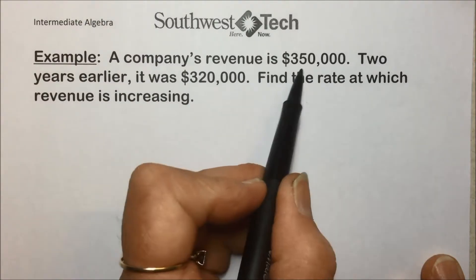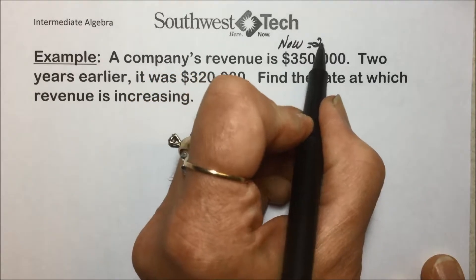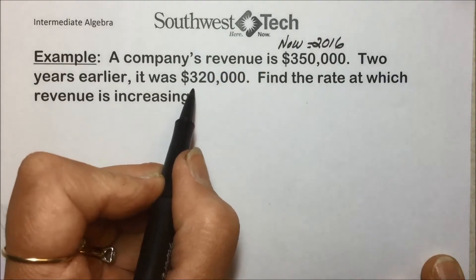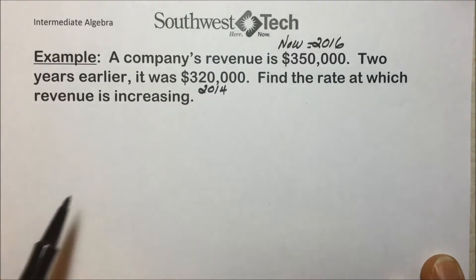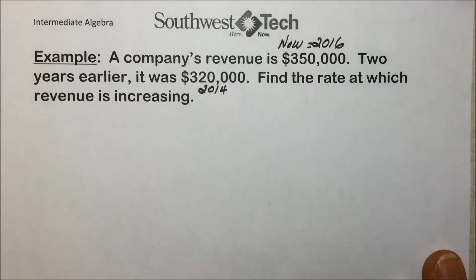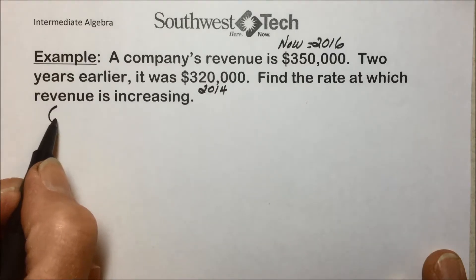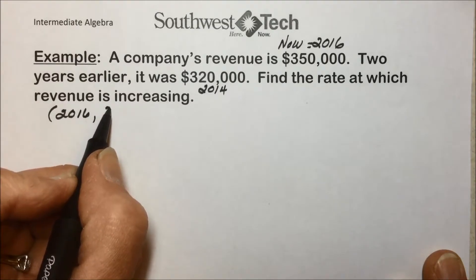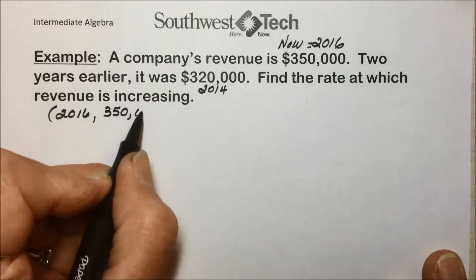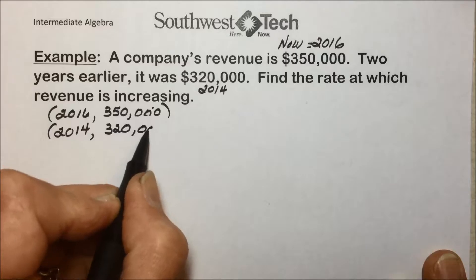A company's revenue is $350,000 — let's say the year is 2016. Two years earlier, 2014, the revenue was $320,000. They're asking us for the rate at which the revenue is increasing, so we have two ordered pairs essentially.